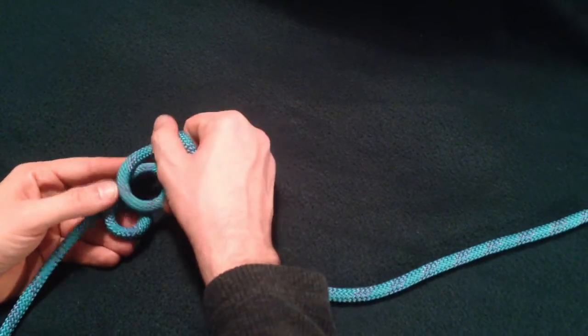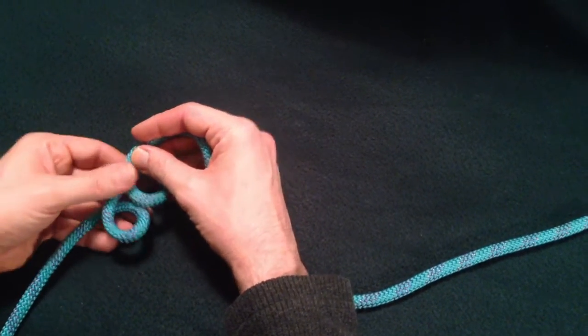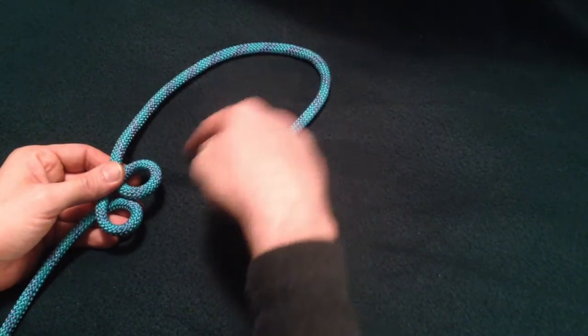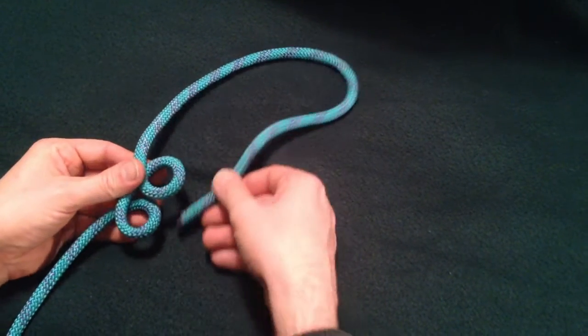In this case, I'm starting with two overhand loops. I'll form the eye part of the bowline.